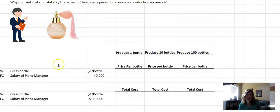Okay, I wanted to answer the question, why do fixed costs in total stay the same, which is what we're used to hearing. Fixed costs stay the same as production increases. But when we're asked what happens per unit for fixed costs, they actually go down. So here's why.